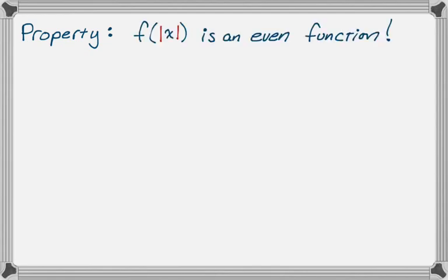There's a property that's going to be really important. f of the absolute value of x is an even function. It has to be because if you do f of negative x, that's f of the absolute value of negative x, which is obviously just f of x. So f of negative x equals f of x, so by definition, an even function.